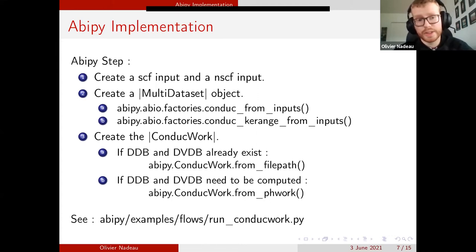If we already have the ddb and dvdb files computed, we can directly give the file path to these files. And if we need to compute them in the same workflow, we only need to give the final work in which we will calculate them. Once we have a workflow, it is easy to start the calculation on your computer or on a calculation server. I've written an example in the Abipy example directory, which is called run_conductwork if you want to start a conductivity calculation for metals.